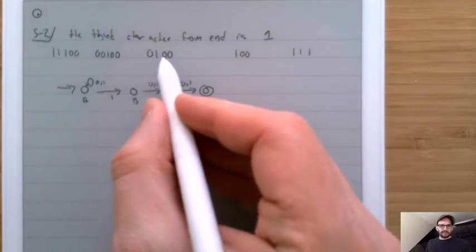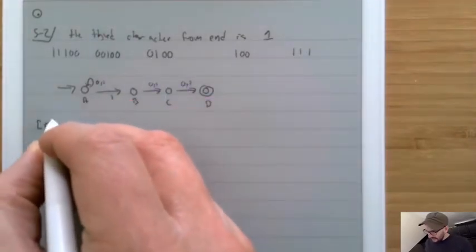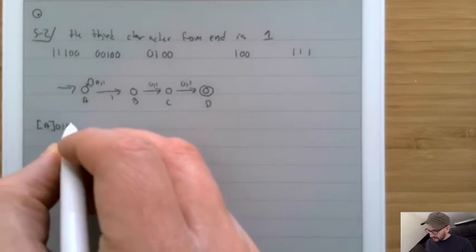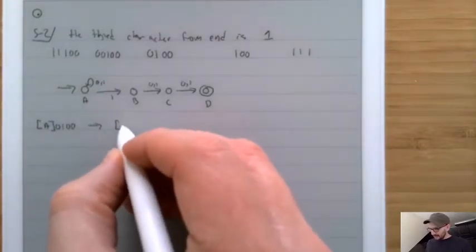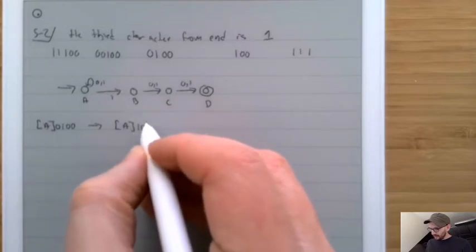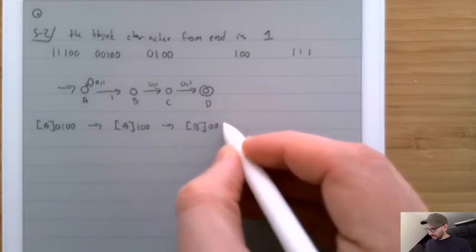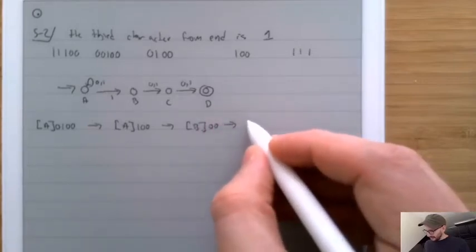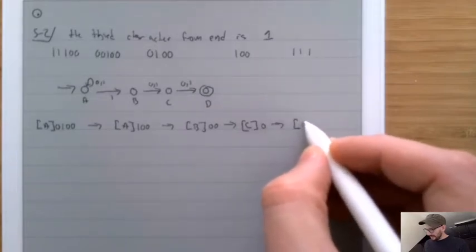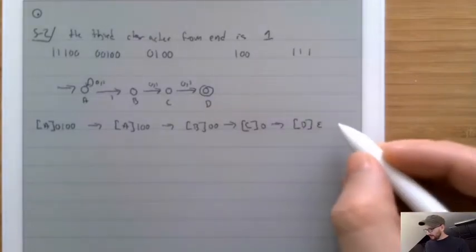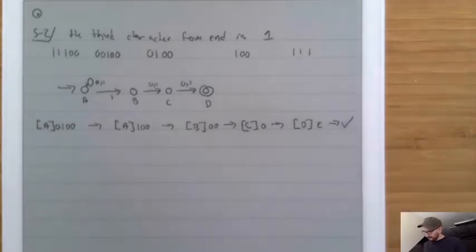Let's look at the example 0100. We start in state A with 0100. Then we go back to A with 100, then to B with 00, then to C with 0, then to D with epsilon. Because D is the accepting state, we are done.